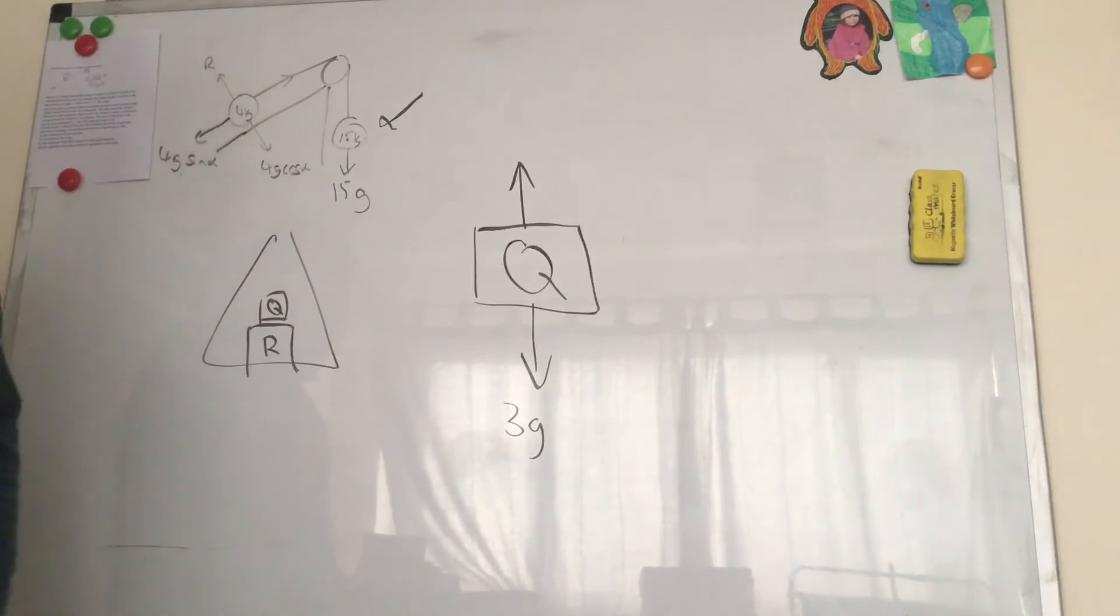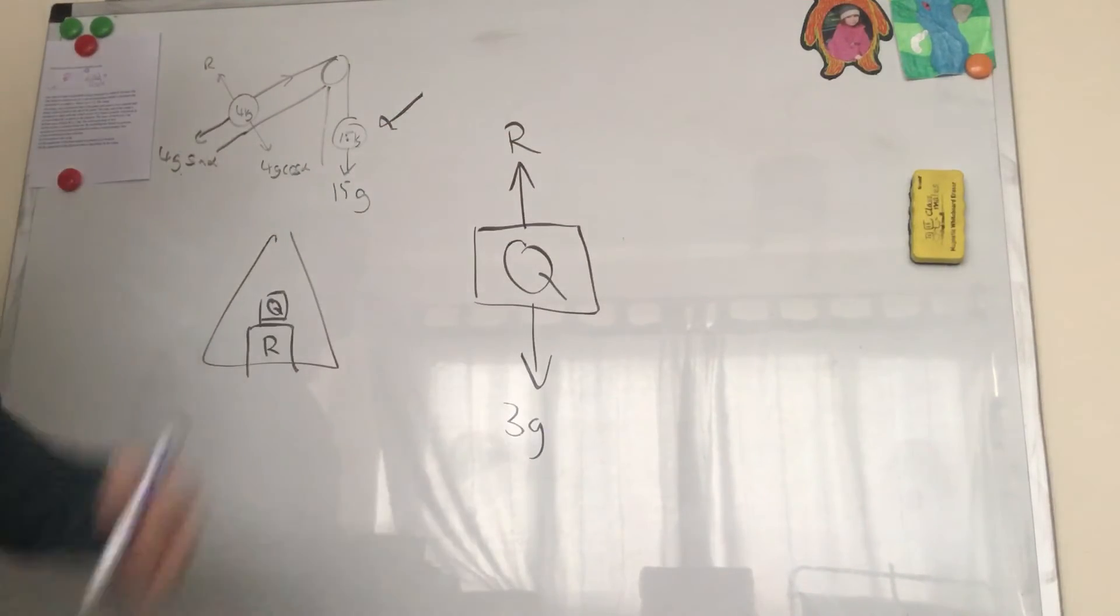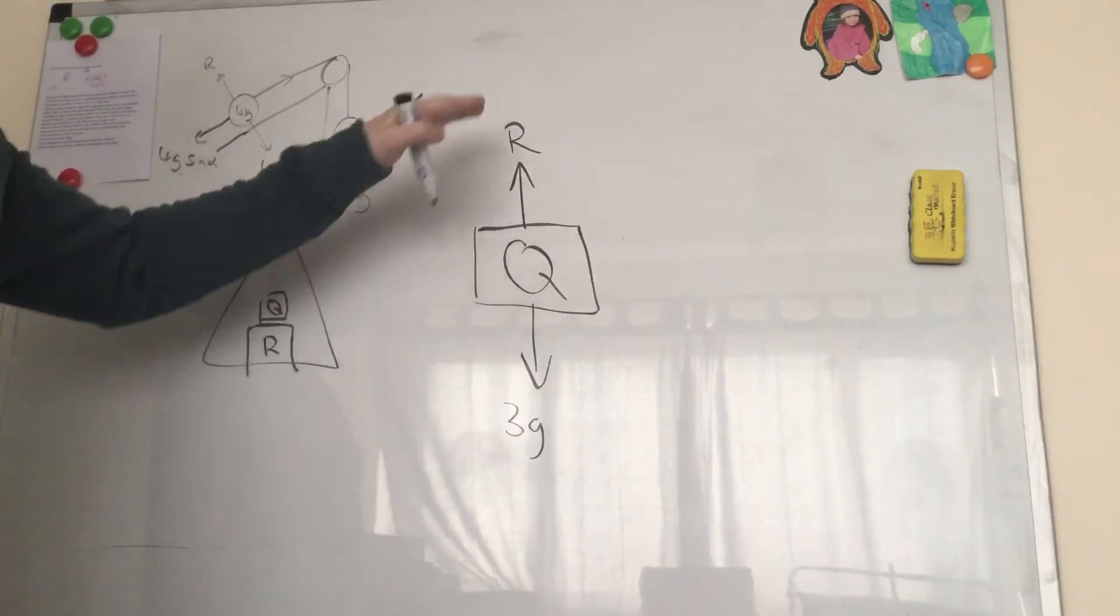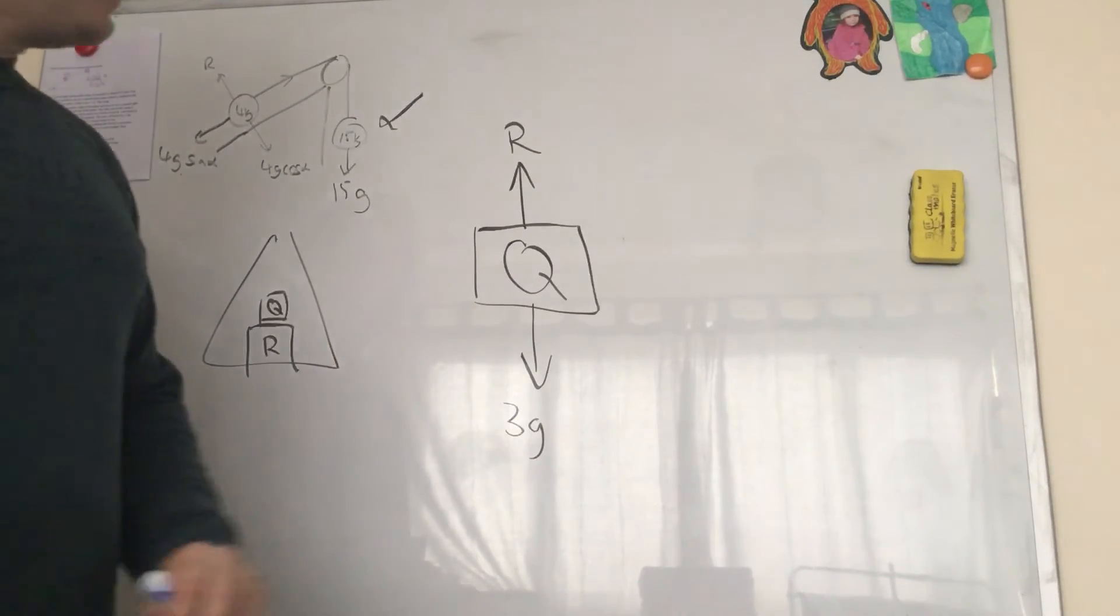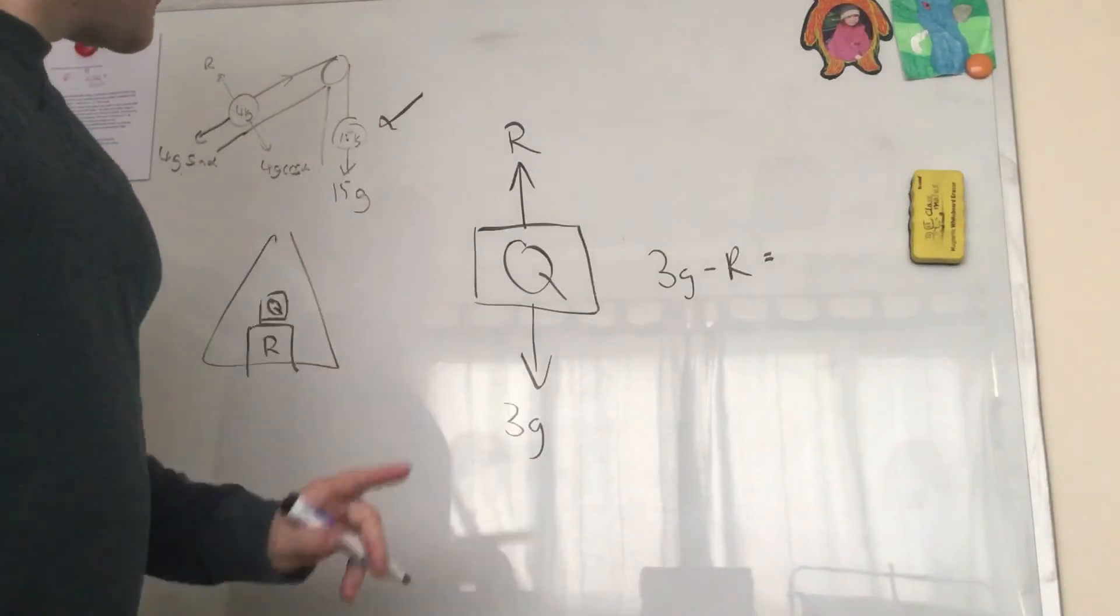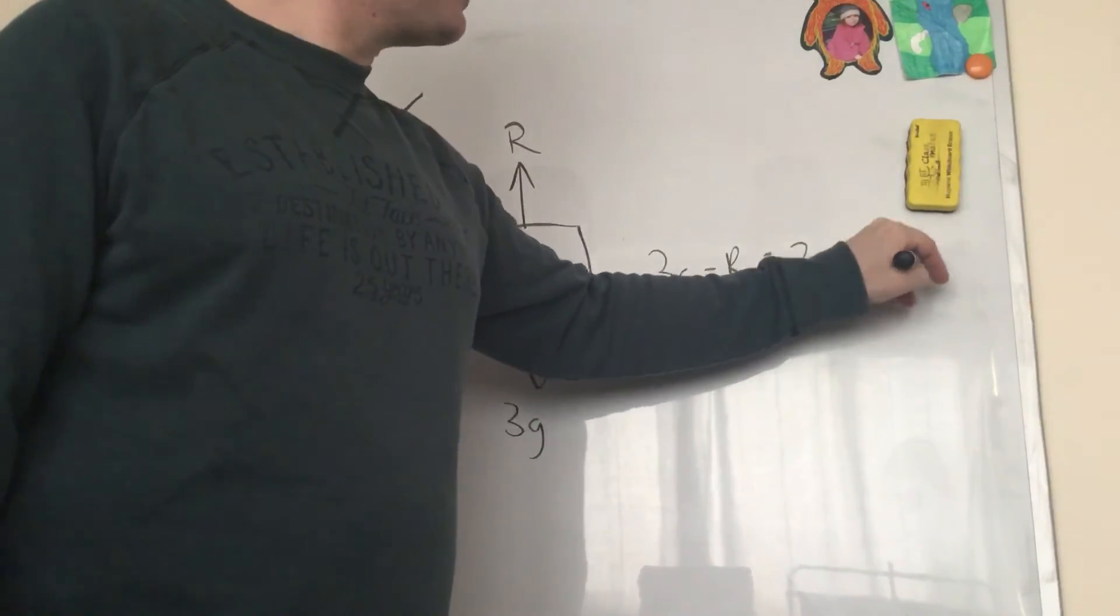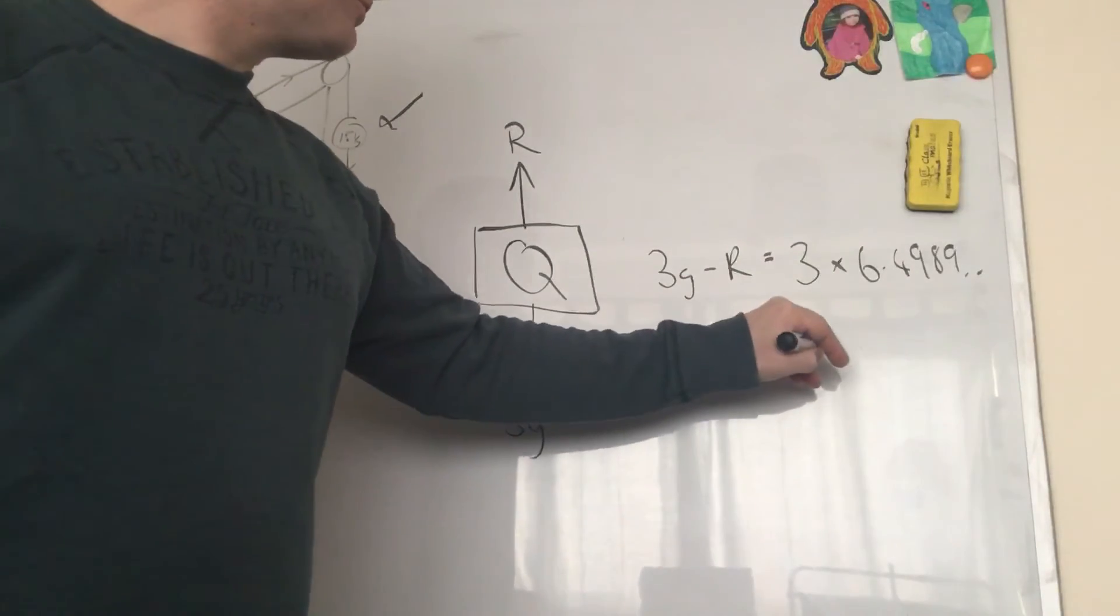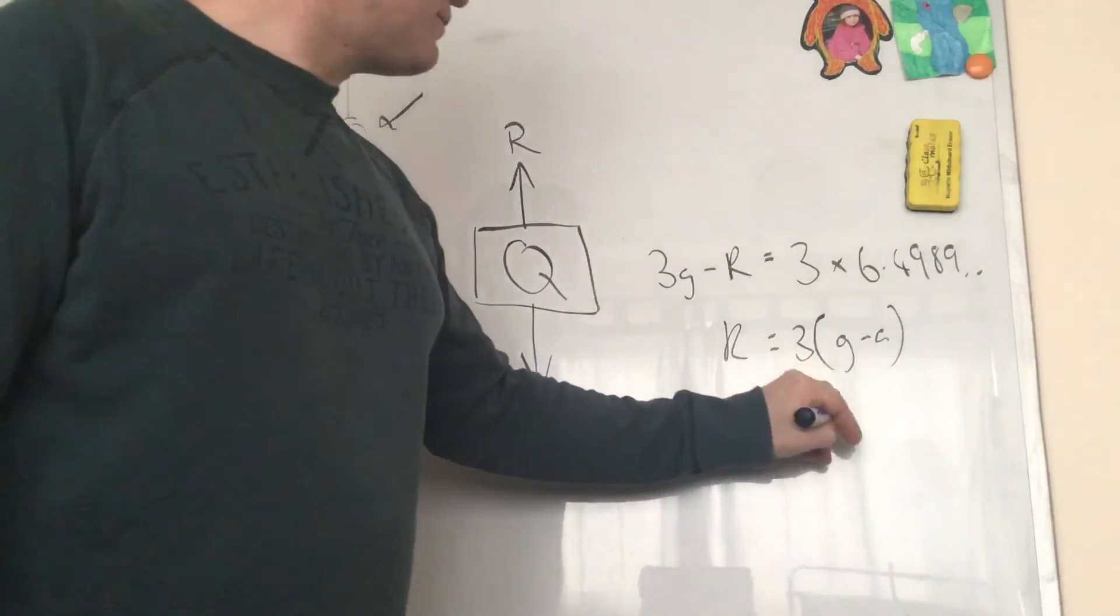Stopping it from plummeting down with acceleration due to gravity and slowing down its acceleration to 6.49 is the reaction force it's getting from R. The reaction force is getting from R we're going to call R. There's nothing else acting on Q, it's got its weight and it's got a reaction force. That reaction force isn't equal to 3g because it's accelerating downwards, this 3g must be bigger. So we get 3g minus R equals the mass of that Q which is 3 times the acceleration which is 6.4989. So we rearrange that, we get R equals 3 bracket g minus a, and that comes out at 9.90 newtons.